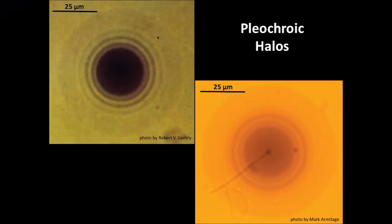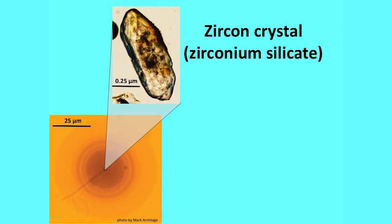These are called pleochroic halos because they show up on a light microscope as a distortion of light. If you look inside the center of a number of these things, you'll find a very small mineral inside called a zircon, made of zirconium silicate.